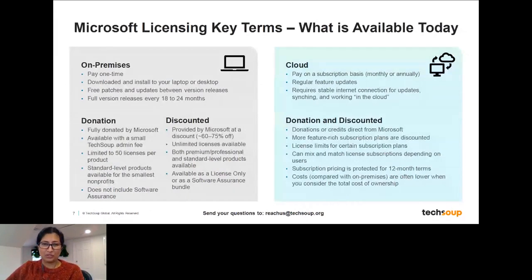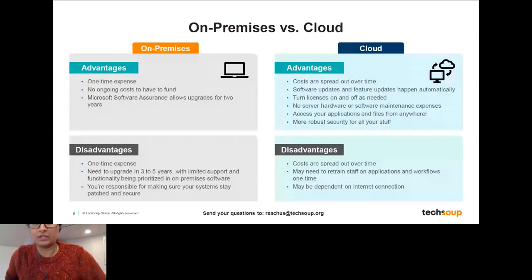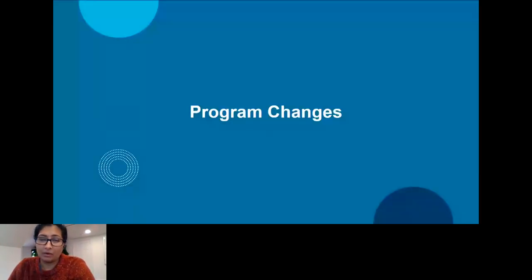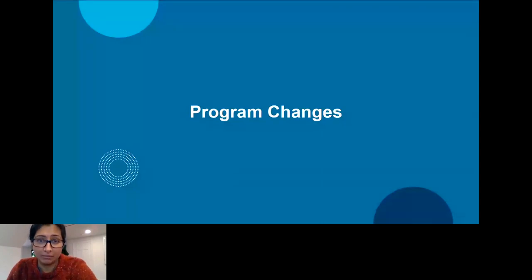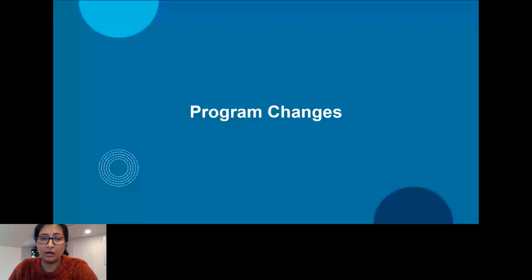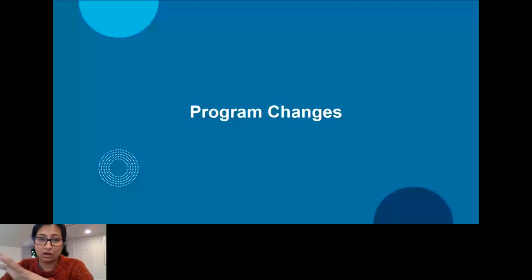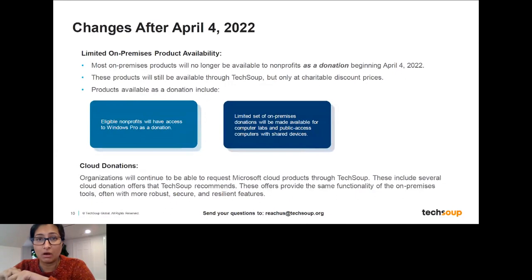I also have a slide here on the advantages and disadvantages of both of these, which you can refer back to in the slides. Now I want to talk about what is changing to these programs. Some of these changes have already been implemented and some are about to be implemented in the next few weeks. On April 4th, there are going to be some limitations particularly on the on-premises offers. Most on-premises products are no longer going to be available as a donation after April 4th. They will still be available, but only at a discounted rate.